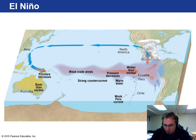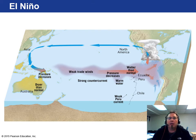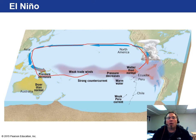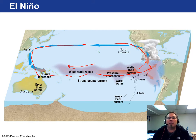During an El Niño event, pressure over the eastern Pacific drops while pressure over the western Pacific rises. This causes the trade winds to diminish, leading to an eastward movement of warm water along the equator, strengthening the equatorial counter-current. Surface waters of the central and eastern Pacific warm, with far-reaching consequences for weather patterns. This warm water gets pushed toward South America, killing off much of the fish population, and it also ends up producing heavy weather in the western United States.